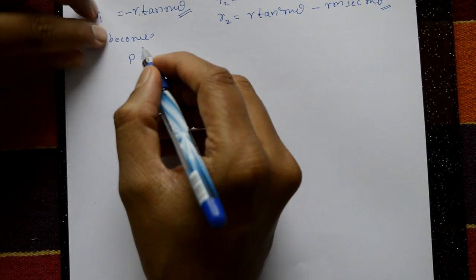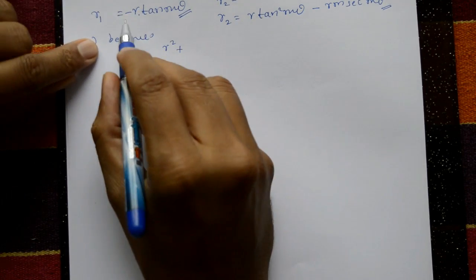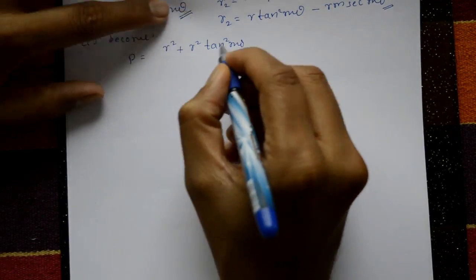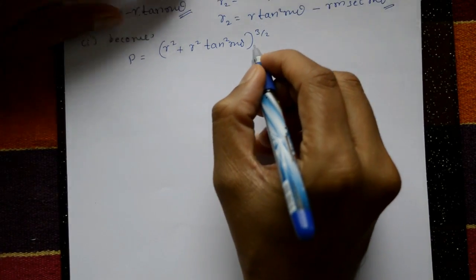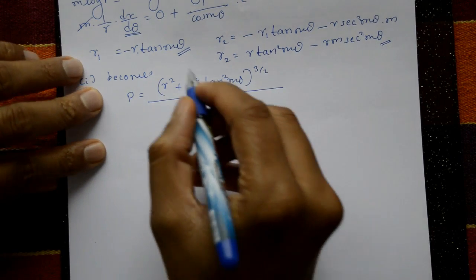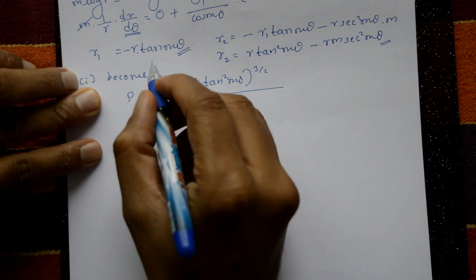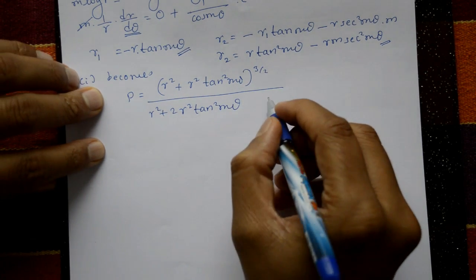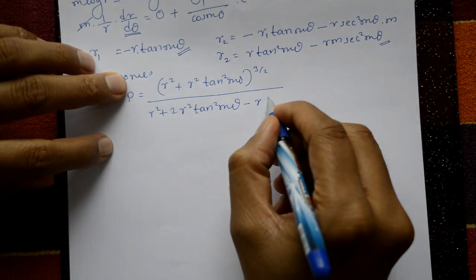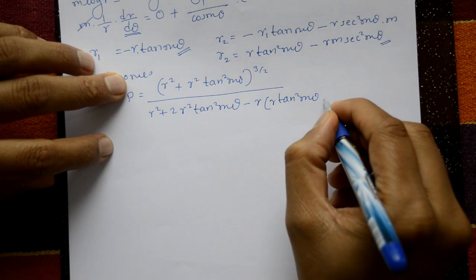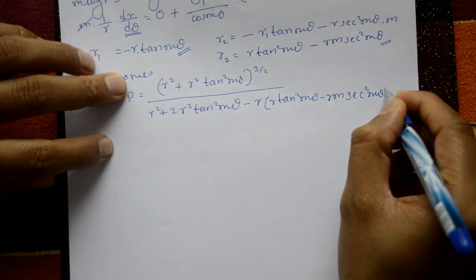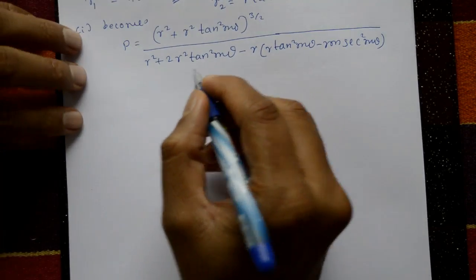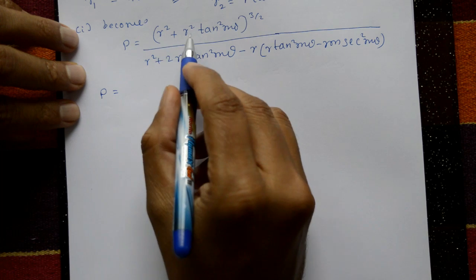Substituting into equation one: numerator is r² + r1² = r² + r²tan²(mθ) = r²(1 + tan²(mθ)), raised to power 3/2. Denominator: r² + 2r²tan²(mθ) − r·r2, where r·r2 = r·[r·tan²(mθ) − r·m·sec²(mθ)] = r²tan²(mθ) − r²·m·sec²(mθ).